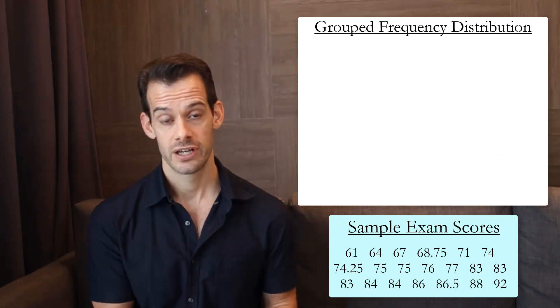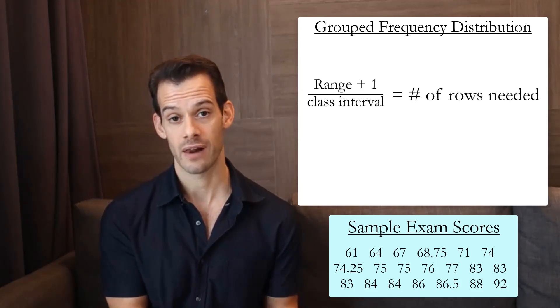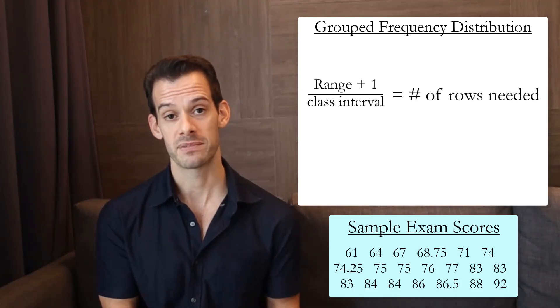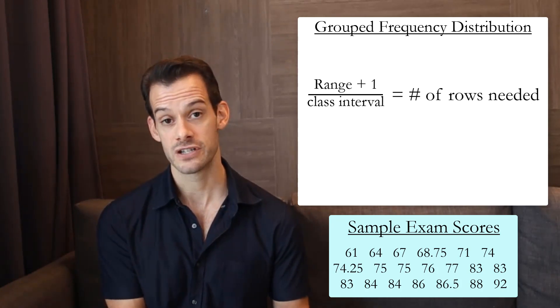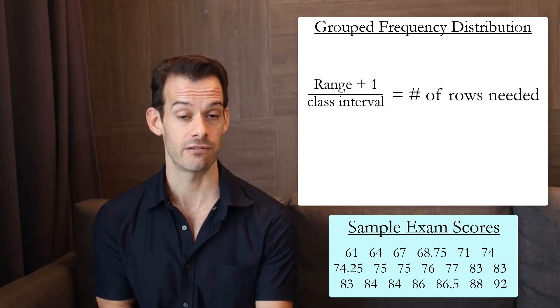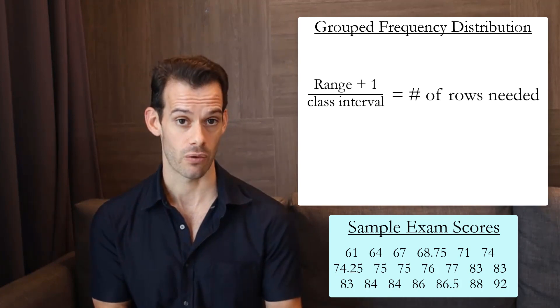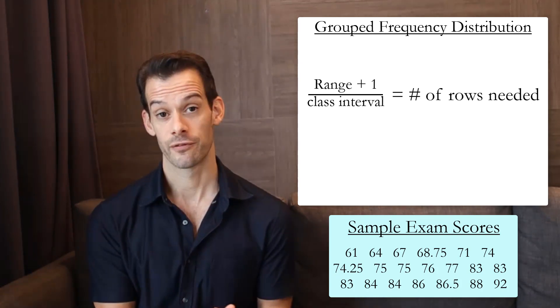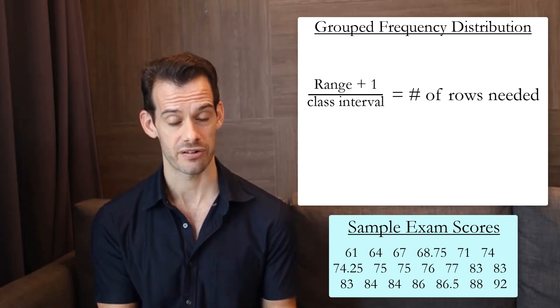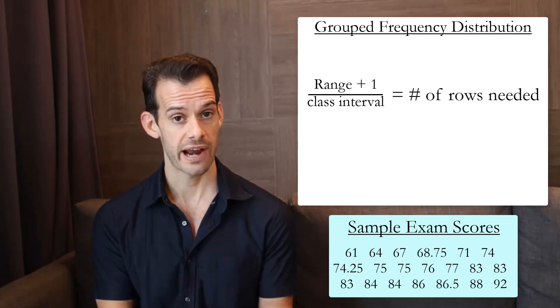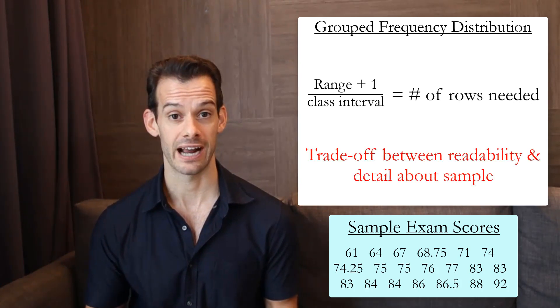To divide your data into class intervals you can take your range plus 1 and then divide it by a possible width of your class interval and then round this up to the nearest whole number and that will tell you how many rows you need. So if we had a class interval of 2 here then we'd need 16 rows which is still a bit high. If we had a class interval of 3 then we'd need 11 rows. Larger class intervals mean that we need fewer rows. But we're sacrificing some of the detail about our sample. So there's a trade-off between the readability of our frequency distribution table and how much information it's providing about our sample.